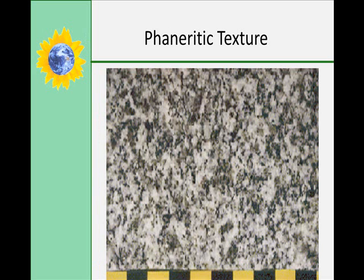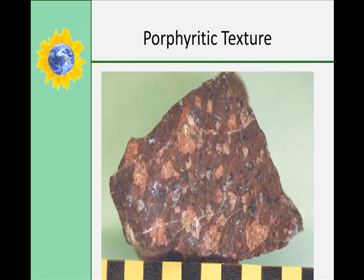Phaneritic textures have coarser grain sizes — you can see the grains; they're visible, ranging from 1 to 10 mm across. These are the result of slow cooling and include granite, diorite, and gabbro. Porphyritic texture has a mixture of grain sizes caused by a mixed cooling history — slow cooling at first, followed by a period of somewhat faster cooling, can produce this type of texture.